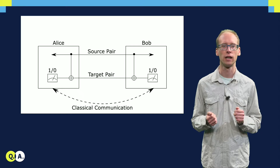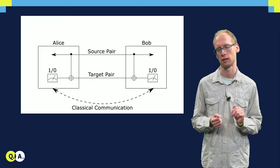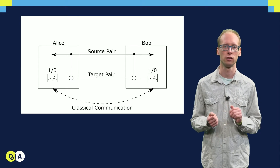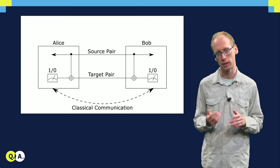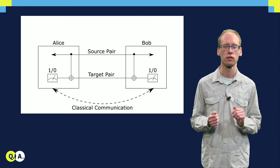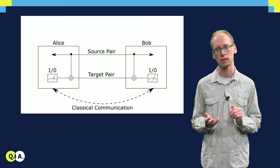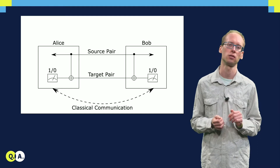Finally, they use a classical communication channel to compare these classical outcomes. For outcome configurations in which the source pair becomes projected into a more entangled state, the source pair is kept. It is discarded if the configuration of outcomes of Alice and Bob doesn't match the success condition, as in that case the measurements have actually decreased the entanglement in the source pair.